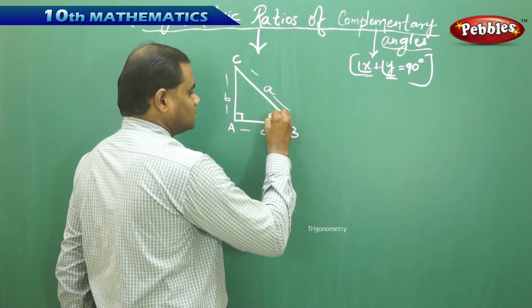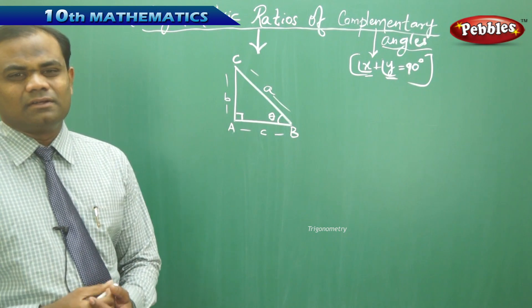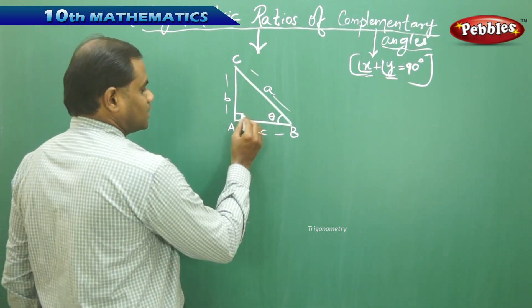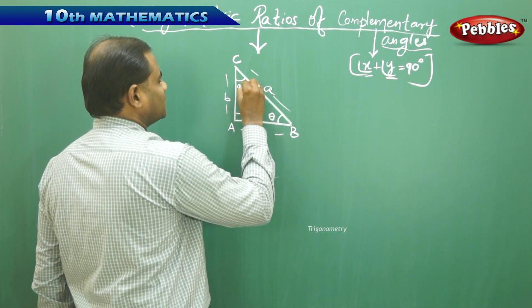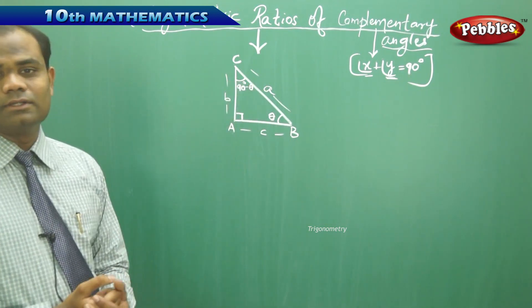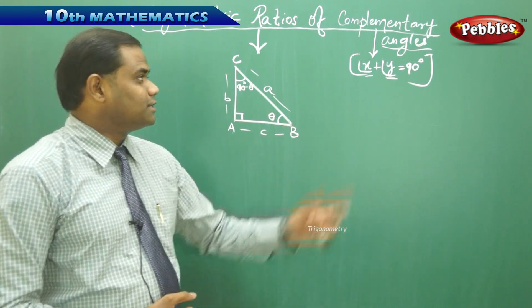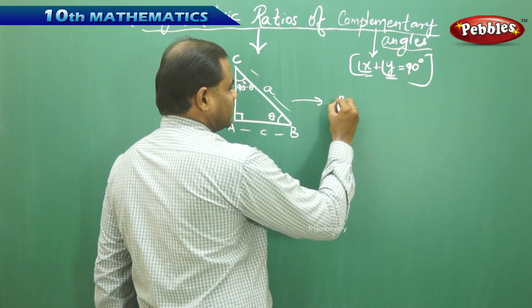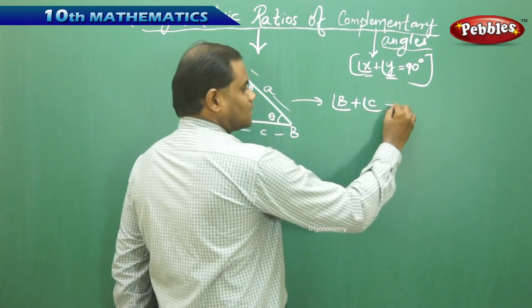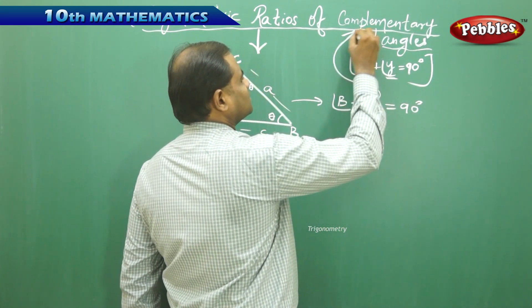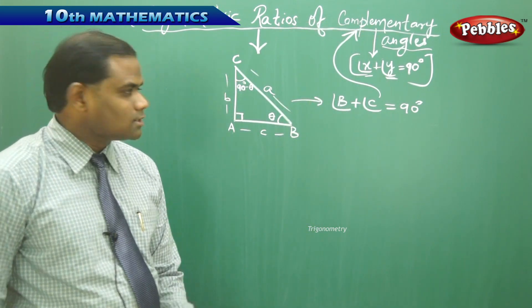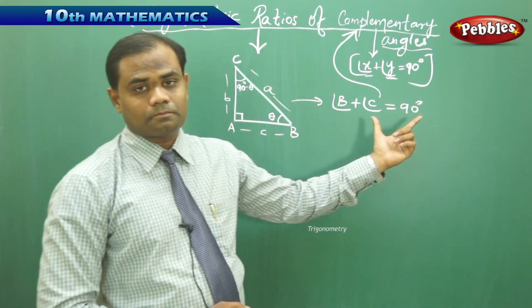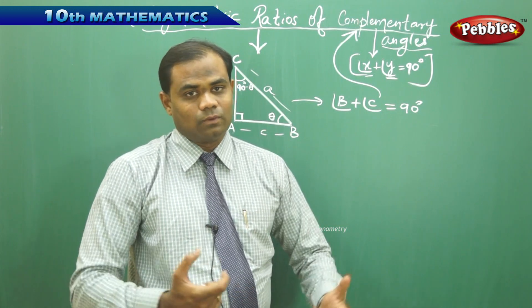Let me take one angle to be theta. If this angle is theta and another is 90 degrees, we know that the sum of all three angles of a triangle is 180 degrees. Therefore, the third angle would be 90 minus theta. This is what makes the definition of complementary angles, because when I sum angle B plus angle C I get 90 degrees, and hence this property is the complementary angle property.